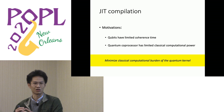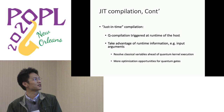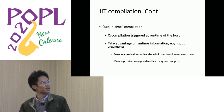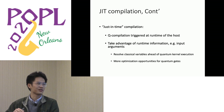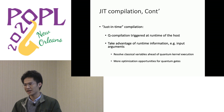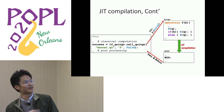Just-in-time compilation is well-suited for this purpose. JIT compilation means triggering the quantum compilation at runtime of the host. It takes advantage of runtime information such as input arguments, allowing it to resolve classical variables in the quantum kernel ahead of execution, and opens even more optimization opportunities for quantum gates such as gate cancellation and communication optimization.